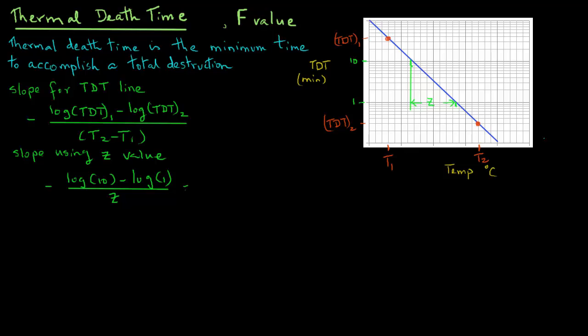And that will equal minus 1 over Z, since log(10) is 1 and log(1) is 0, so the numerator is 1. Since these two slopes that we obtain are for the same line, so they must equal. So we have log(TDT1) minus log(TDT2) divided by T2 minus T1 equals 1 over Z.